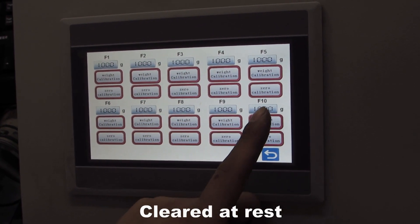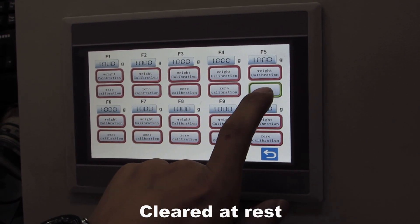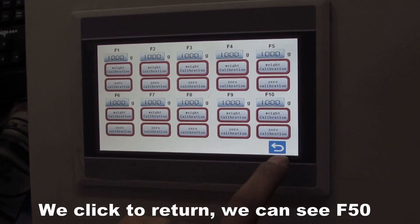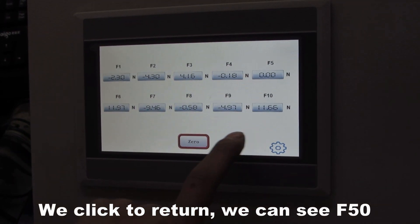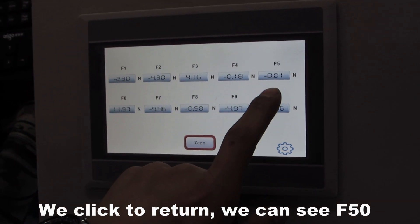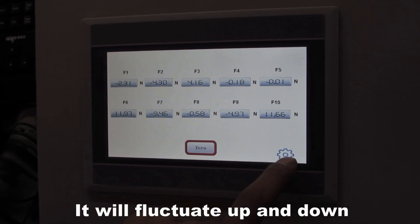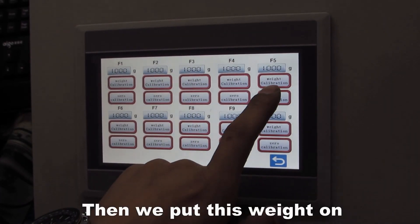Cleared at rest. We click to return. We can see F5 at 0. It will fluctuate up and down. Then we put this weight on.